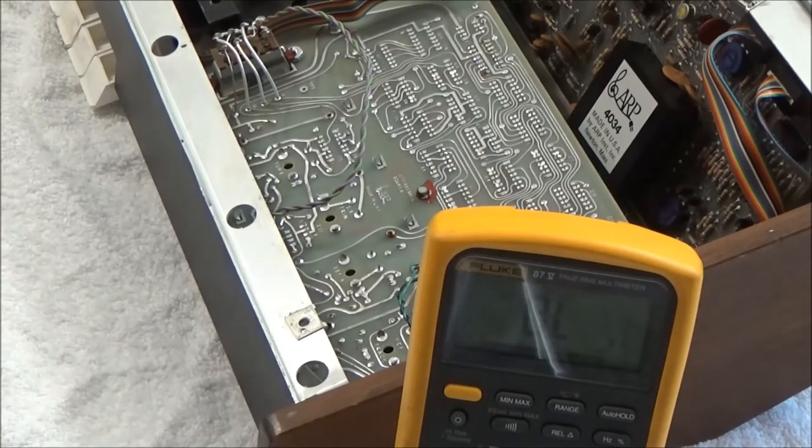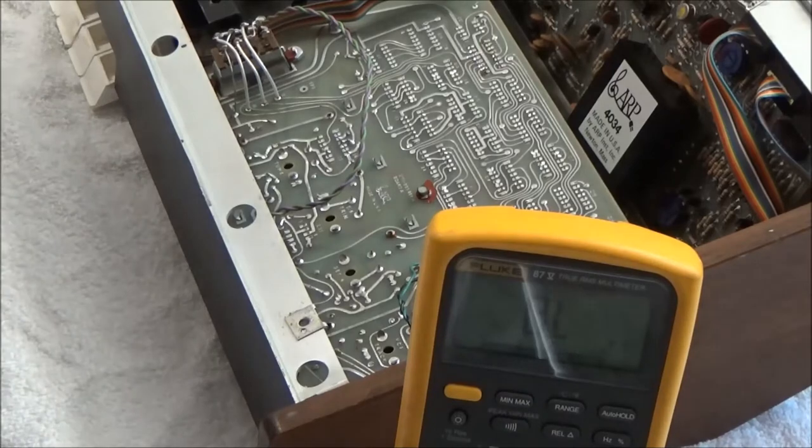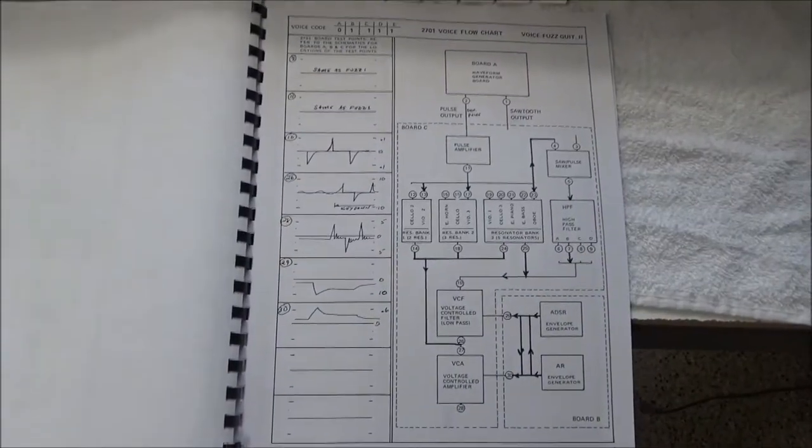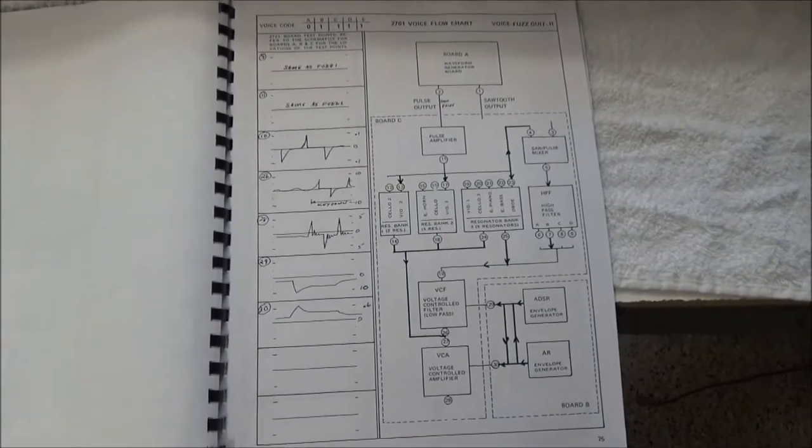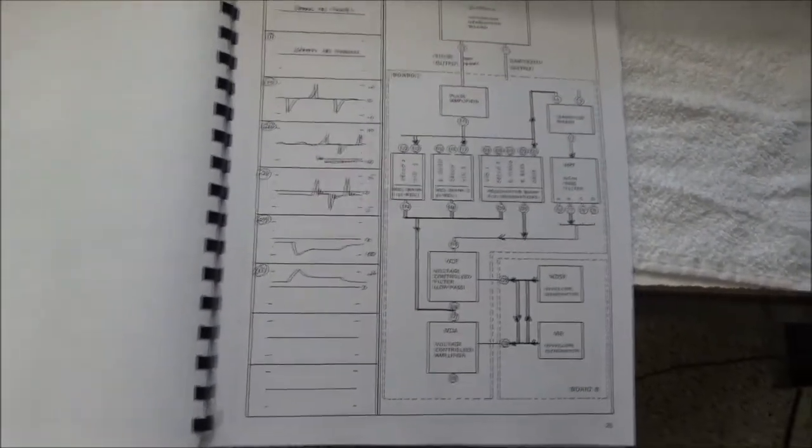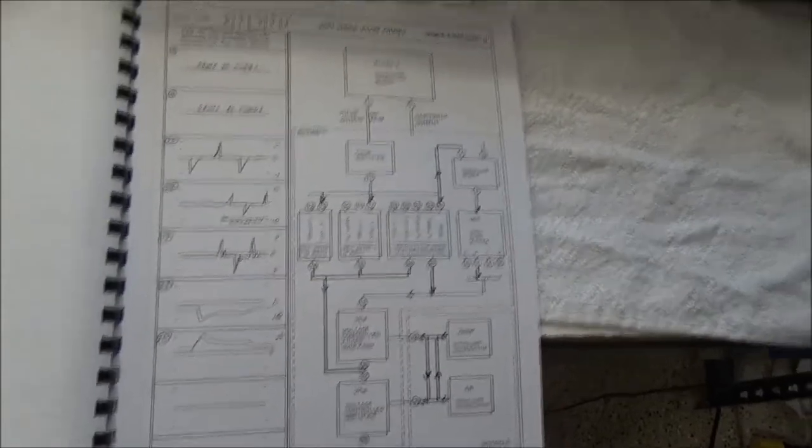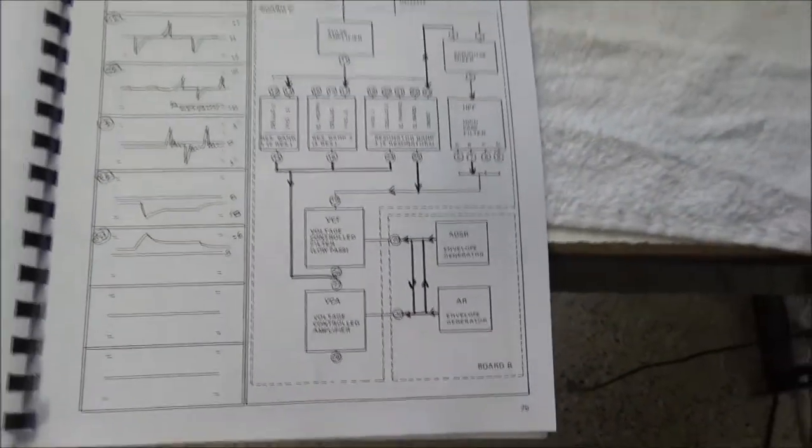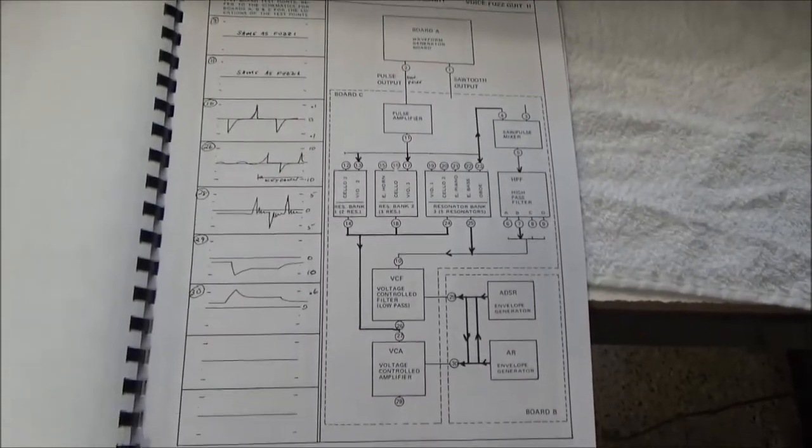We're going to replace the touch sensor strip if that part is bad. Again, a very common problem, and replacement touch sensor strips are on my website at synthchaser.com. I've showed in other Pro Soloist and Pro DGX repair videos how you can use these sample waveforms that it shows in the service manual and these flow charts of the signal path to track down problems with individual patches.